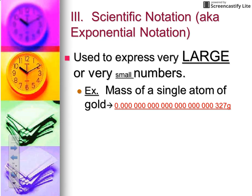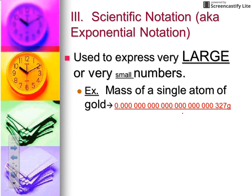Notice here we have a decimal, and after the decimal we have a total of 21 zeros and then 327 grams. We talked about in our previous lesson accuracy and precision, and if you were recording this number it would be extremely easy to make a careless mistake — maybe miss writing down a zero if you miscounted. We want to strive for accuracy and precision in all of our measurements, so in order to avoid any confusion we can write this very tiny number in scientific notation.